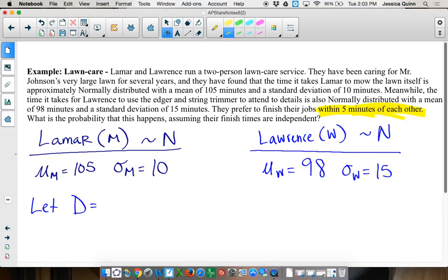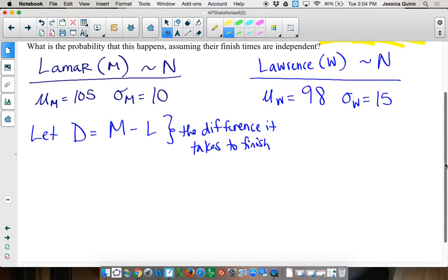So we're going to call this D, or whatever letter you want. So D is going to be the difference in their times. So we need to pick, this is super important, does order matter with subtraction? Yes. So we need to pick an order right now and then stick with it. It doesn't matter which order we do initially, but whatever order we pick, we've got to stick with that order. So do you want to do Lamar minus Lawrence?